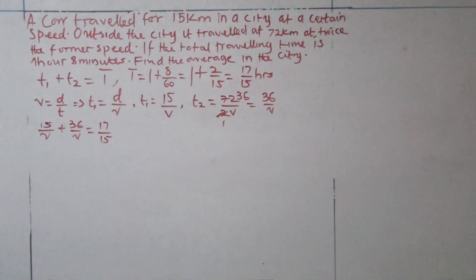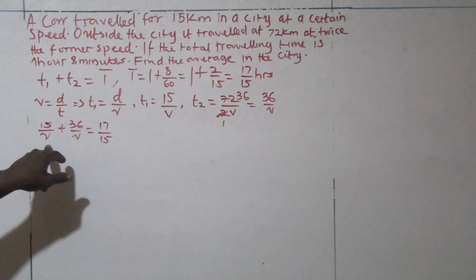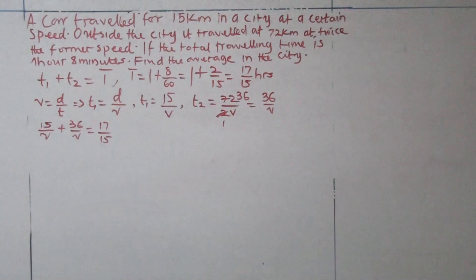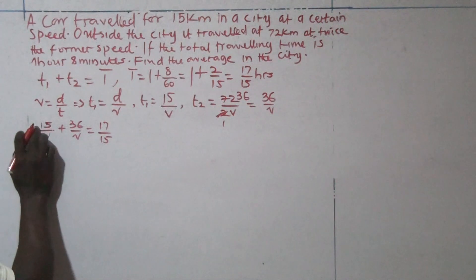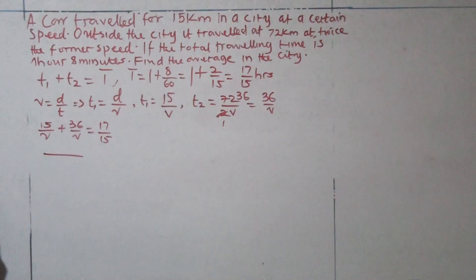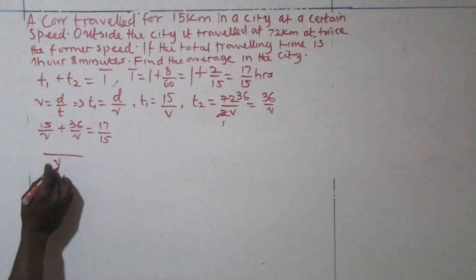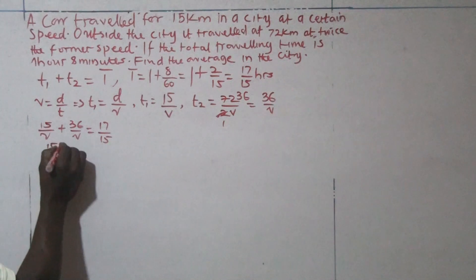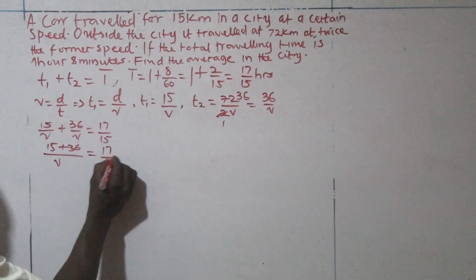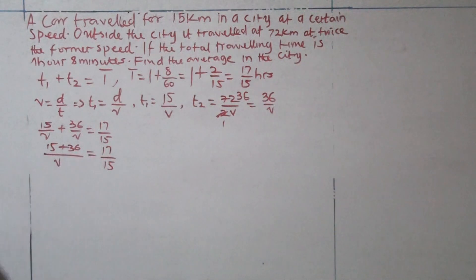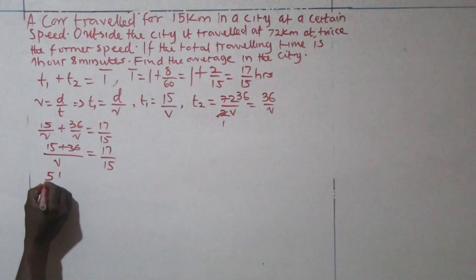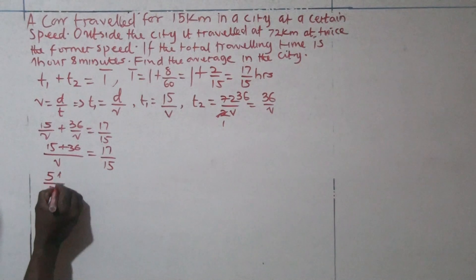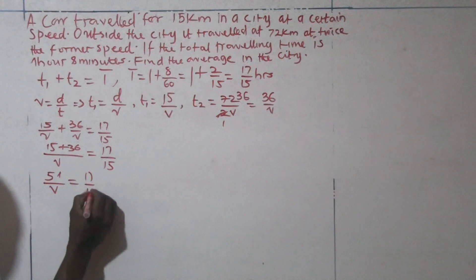Here, we look at the left-hand side of this fraction. The LCM is just V. The LCM of this left-hand side is V. V in V is 1, 1 times 15 is 15, plus V in V is 1, 1 times 36 is 36, is equal to 17 over 15. Now, 15 plus 36, that will give us 51, 51 over V is equal to 17 over 15.